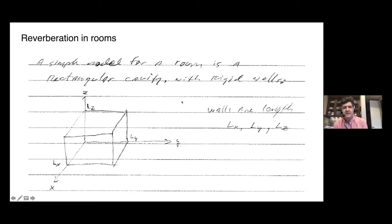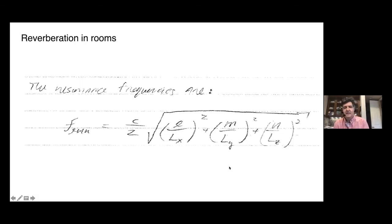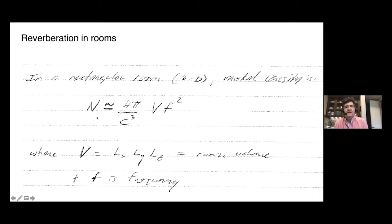Here we consider a rectangular room with flat walls of different lengths LX, LY, LZ. This room has resonance frequencies, which you can calculate — they are basically integer multiples of half wavelengths in each of the three dimensions. An index number counts up the integer multiples for each dimension. The number of those modes is dependent upon the room volume V and the frequency of the sound, and it's inversely proportional to the speed of sound cubed. When the number of modes is low, we might not perceive reverb — we might perceive something more like individual echoes.